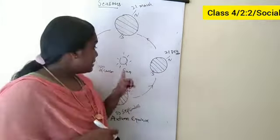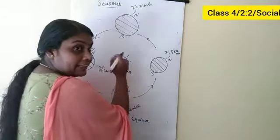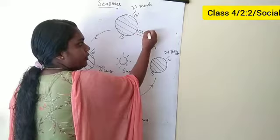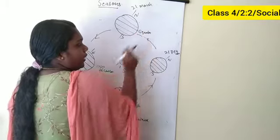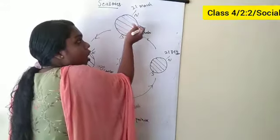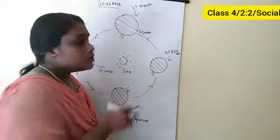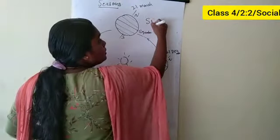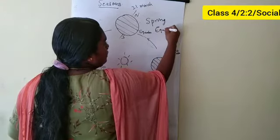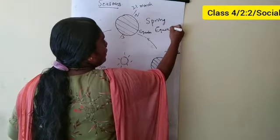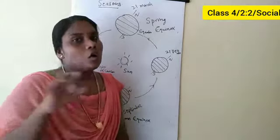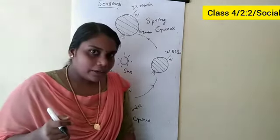Around 21 March, the sun's rays directly fall on the equator again. This is the spring equinox. Equinox means equal length of day and night all over the world.